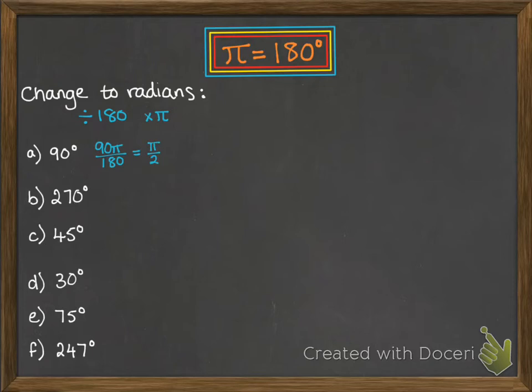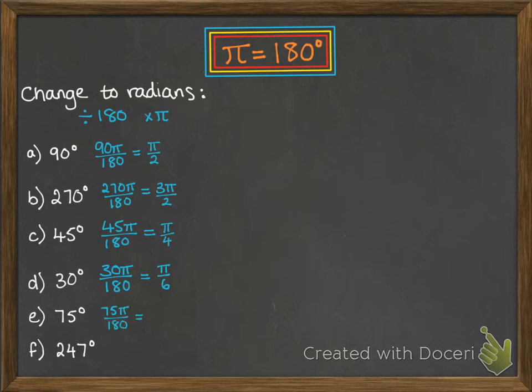Next one, 270, we're going to times it by π and divide by 180, and simplify that to 3π by 2. 45 degrees, well that's a quarter of 180, so we come out with a quarter π, or π by 4. 30 degrees, 30 out of 180 is a sixth, so we get π by 6.